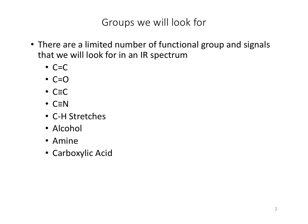We're going to be focused on the diagnostic region. There are a limited number of functional groups and signals we're specifically going to look for in an IR spectrum: double bonds between carbon-carbon and carbon-oxygen, carbon-carbon and carbon-nitrogen triple bonds, CH stretches, and alcohols, amines, and carboxylic acids. That's it — these are the bonds and functional groups we're looking for.